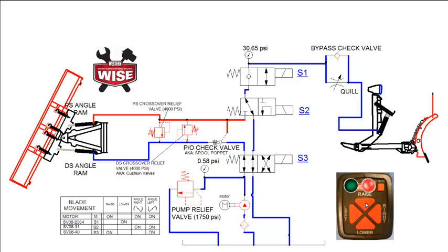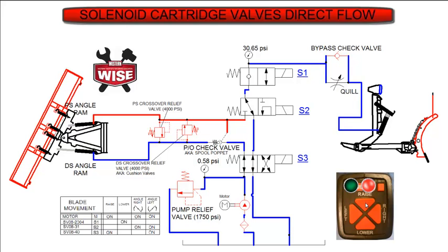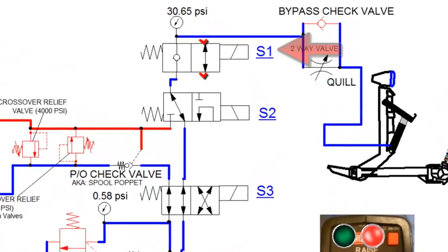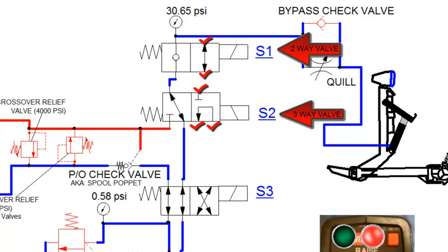Solenoid cartridge valves are a type of directional control valve that are used to start, stop, and change the direction of flow in a hydraulic circuit. These valves are typically designated by the number of possible flow paths. For example, a four-way valve would have four flow paths. We use several different versions of the two-, three-, and four-way valves in our hydraulic systems. Our straight blade plows have three solenoid cartridge valves: one two-way valve labeled S1, one three-way valve labeled S2, and one four-way valve labeled S3. The possible flow paths for each valve are designated by the red check marks.